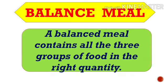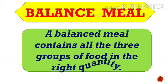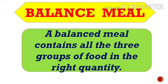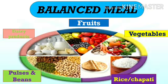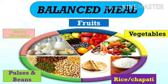A balanced meal contains all three groups of foods in the right quantity — energy-giving food, body-building food, and protective foods. A balanced meal includes fruits, vegetables, rice and chapati, pulses and beans, and dairy products. Dairy products means milk, curd, butter, cheese, paneer, cream, etc.